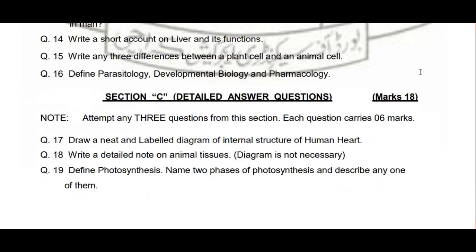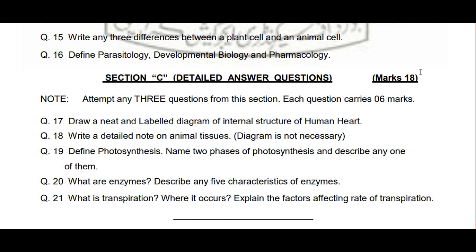Then: 'Define parasitology, developmental biology and pharmacology.' Teen definitions hain again. Ab Section C aata hai jiske total 18 marks hain. 5 questions mein se sirf 3 attempt karne hain aur har question ke 6 marks hain. Answering 6 marks ko dekhte huwe karni hai — na bohat zyada lambi, na bohat short.